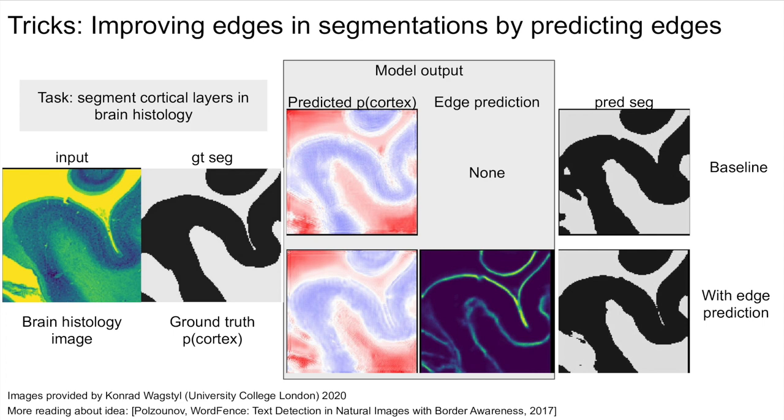One trick when the edges of a segmentation are important is to predict them as an independent output or a third class. In this use case, we would like to predict the cortex from brain histology, which has folds that are important to capture in the resulting segmentation. Instead of just predicting the segmentation target, another output is predicted and trained to be a binary map of the edges. This forces the network to learn a special representation for edges that will make it easier for the segmentation output to predict gaps between folds.